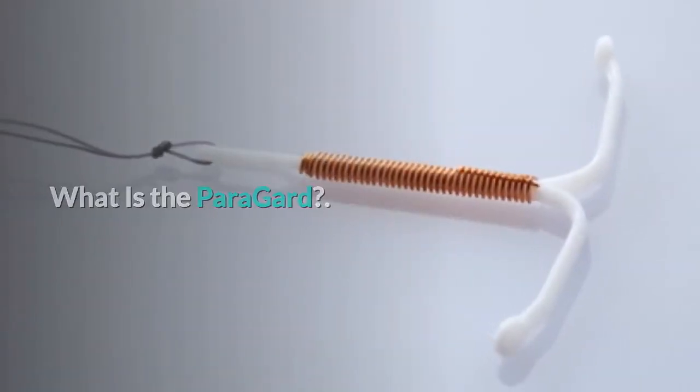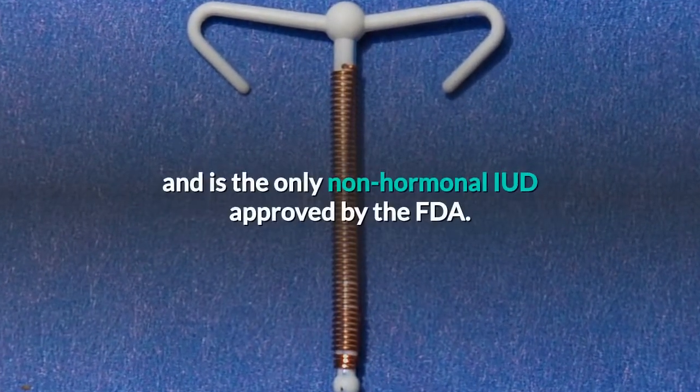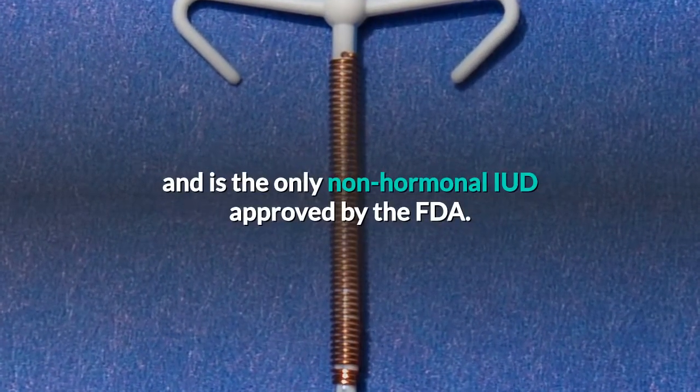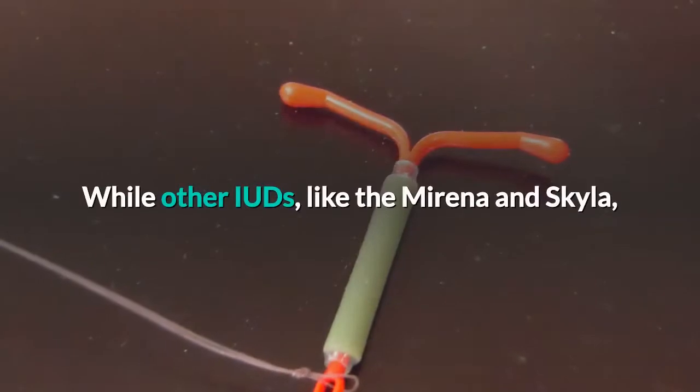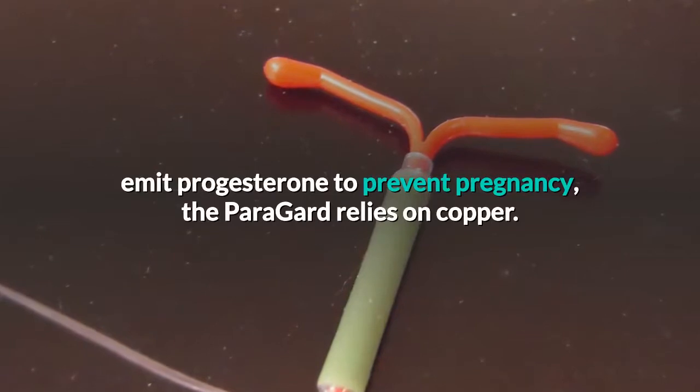What is the Paragard? The Paragard works to prevent pregnancy while inserted in the uterus, and is the only non-hormonal IUD approved by the FDA. While other IUDs, like the Mirena and Skyla, emit progesterone to prevent pregnancy,